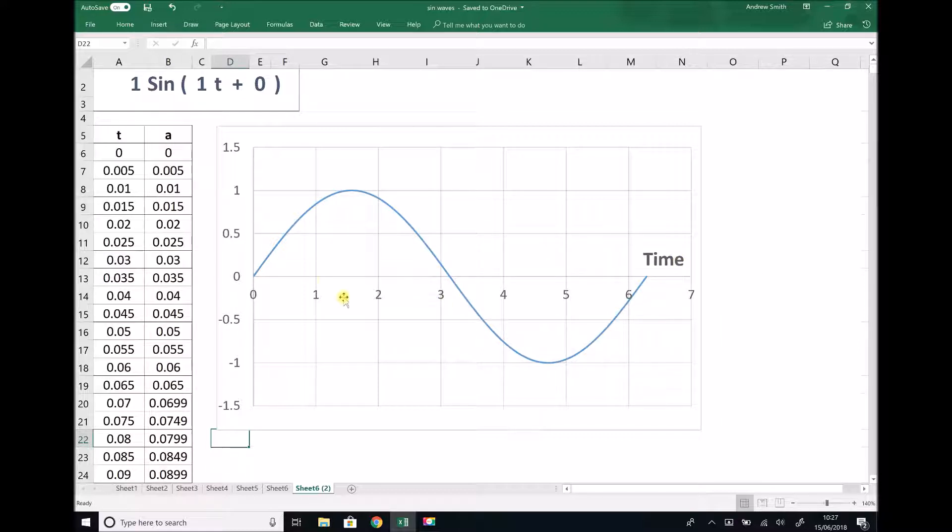Hopefully you recall that when we've looked at this previously, a sine function or sine t will repeat every 2π radians. The reason for that is when we work in radians, there's actually 2π radians in a full revolution. So if there's 2π radians in a circle, then one oscillation takes 2π seconds, and 2π is roughly 6.28.